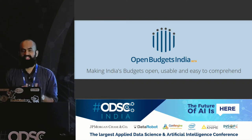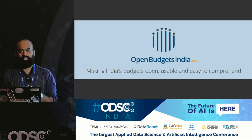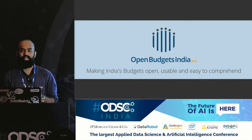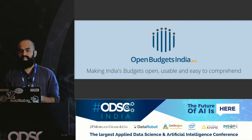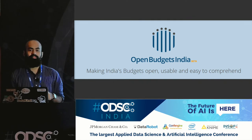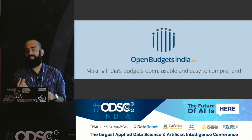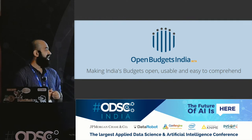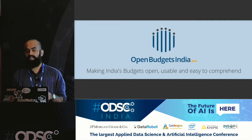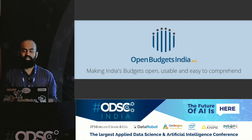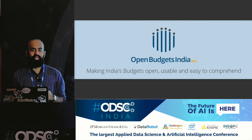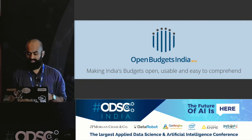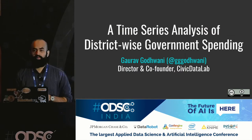It consists of all the fiscal information of the country ranging from union budgets since 2010 onwards in machine-readable formats, couple of state budgets in machine-readable formats like Karnataka, Sikkim, West Bengal, Assam and so on, and a lot of municipal corporations budgets — close to 55 municipal corporations are covered on the platform. Everything is free, open for use and under Creative Commons license.